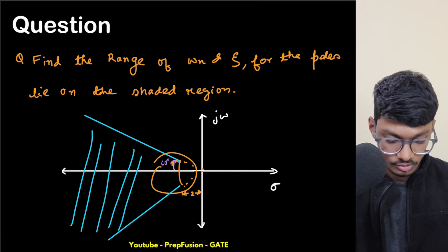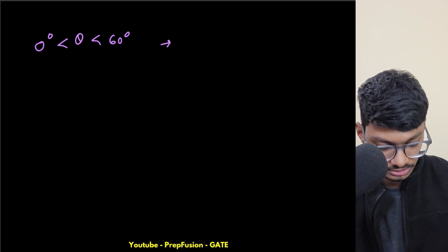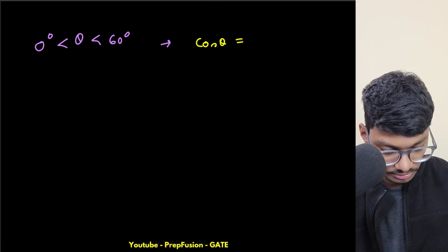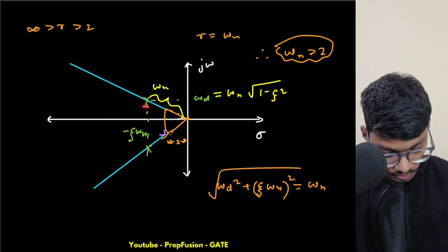Now if you recall one thing: what was zeta equal to? Zeta equals cos theta. If you recall it correctly, zeta was equals to cos theta.